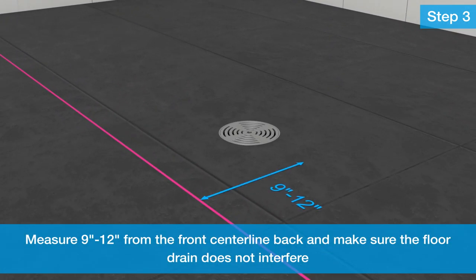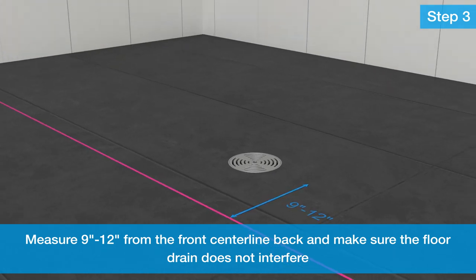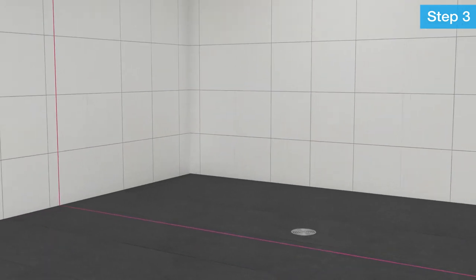Then, measure 9 to 12 inches back from the front centerline to locate where the pedestal will be set. Make sure the pedestal will not interfere with the floor drain. If it does, plan on relocating the divider pedestal within the 9 to 12 inch range.